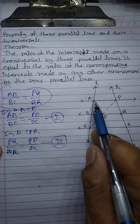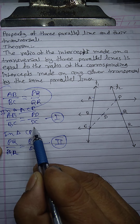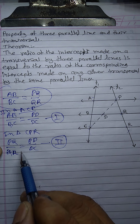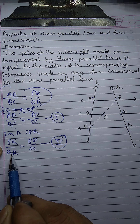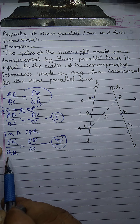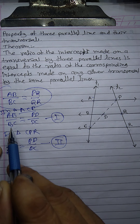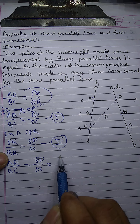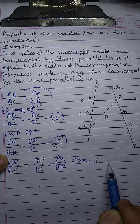From equation one: AB upon BC is equal to PD upon DC. From equation two: PQ upon QR is equal to PD upon DC. Since the right-hand sides are the same, combining both equations gives us: AB upon BC is equal to PD upon DC is equal to PQ upon QR. Therefore, AB upon BC equals PQ upon QR.